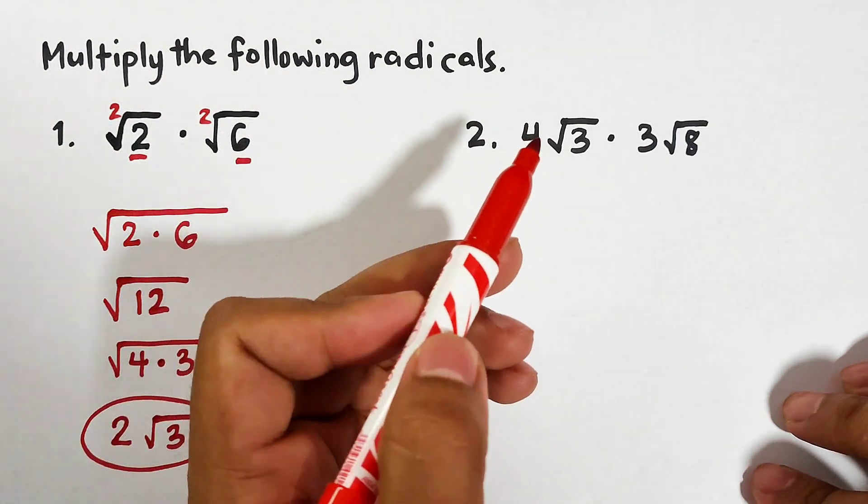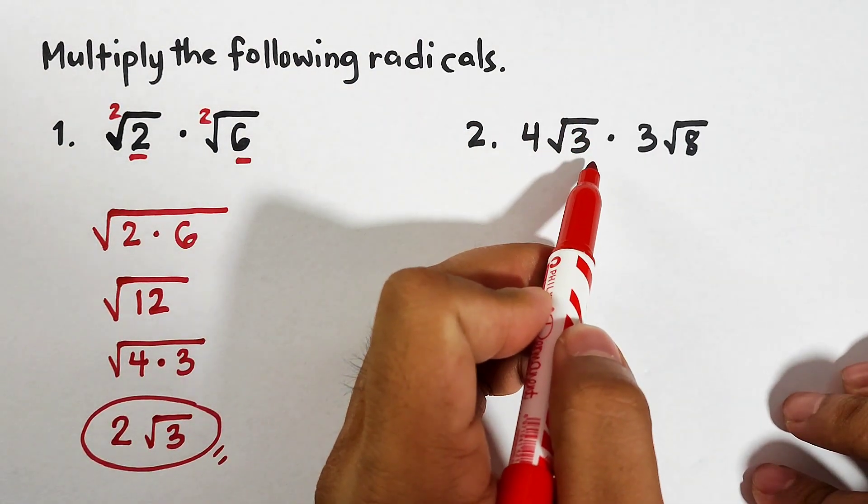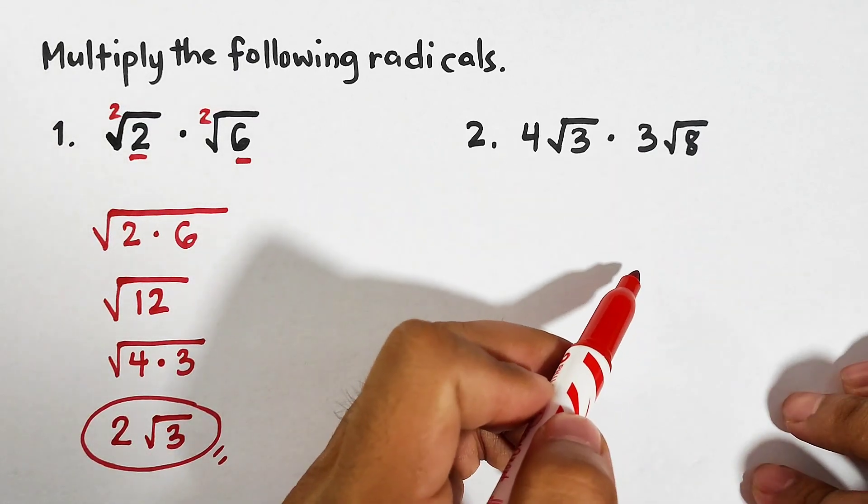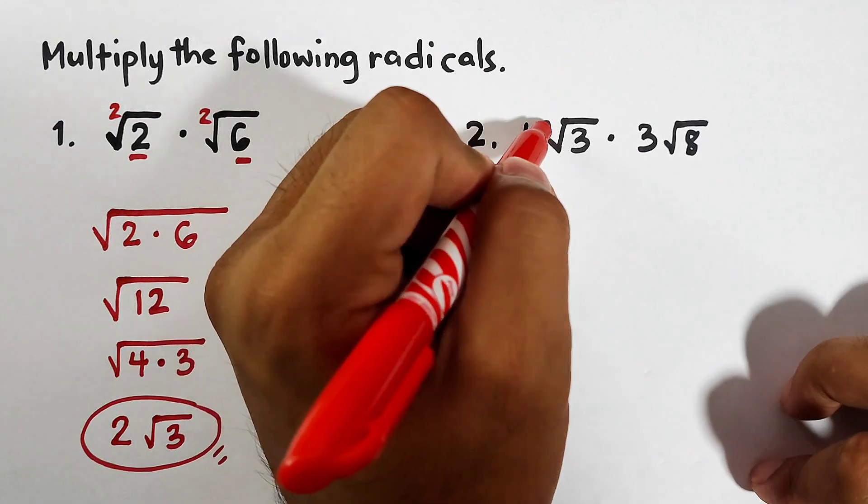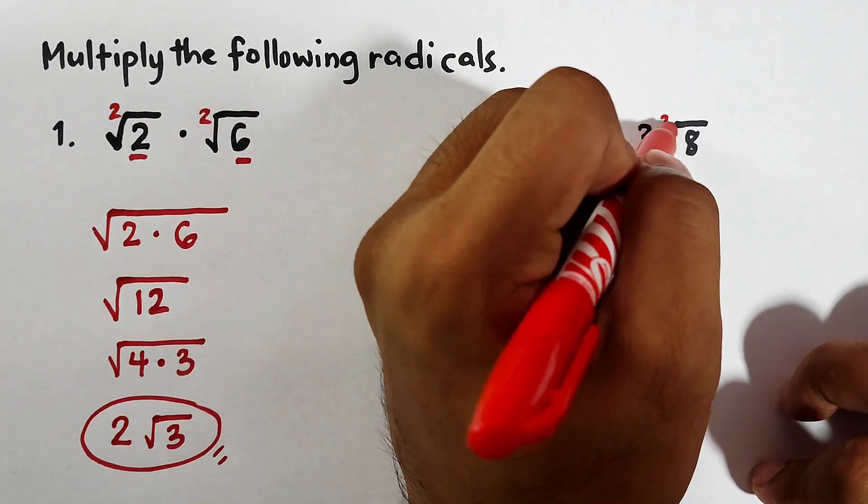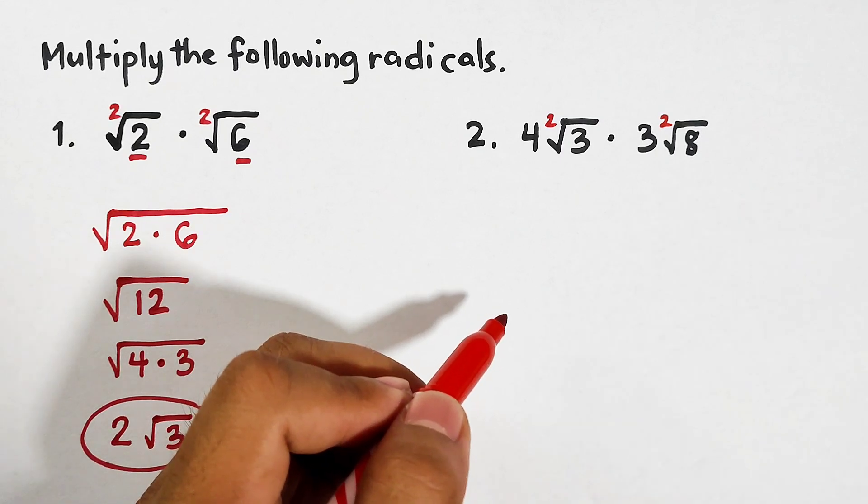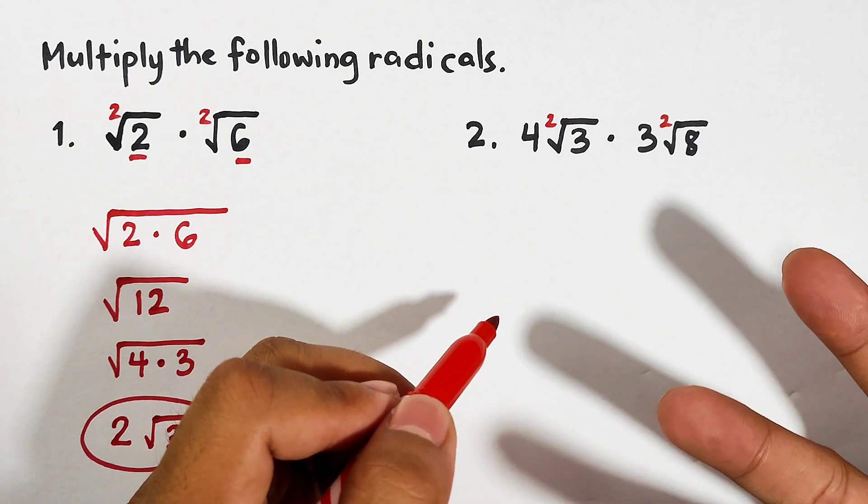And then at the end you need to simplify the product, and that's it. Now let's move on with item number two. In number two, here we have 4 square root of 3 times 3 square root of 8. So basically they have the same indices, which is 2.